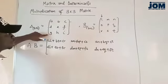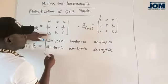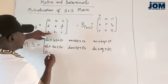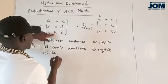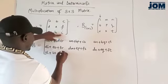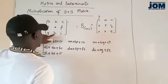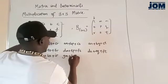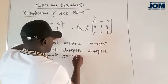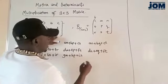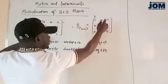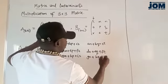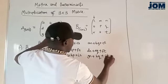Simple as that. Then the third row, first column: G multiplies L, plus H multiplies O, plus I multiplies R. And we go to the second column: G multiplies M, plus H multiply P, plus I multiply S. And we go to the third column: G multiplies N, plus H multiplies Q, plus I multiply T.